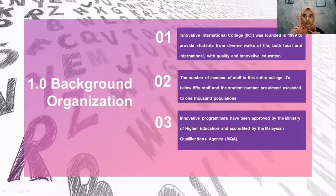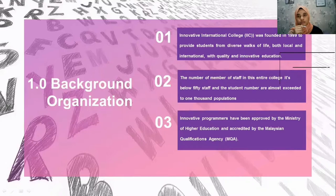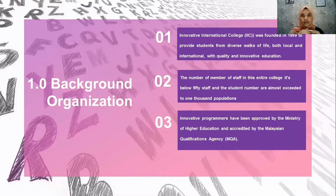Regarding the background of the organization: Innovative International College was founded in 1999 and provides education to students from diverse walks of life, both local and international, with quality and innovative education. The number of staff is below 50 and the student population has exceeded 1,000. The college has been approved by the Ministry of Higher Education and accredited by the Malaysian Qualifications Agency (MQA).